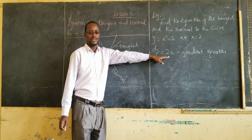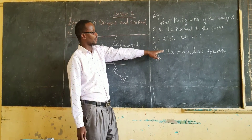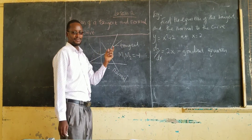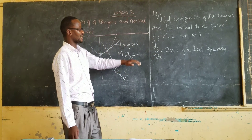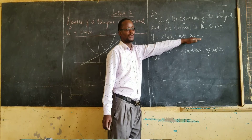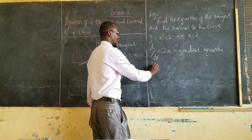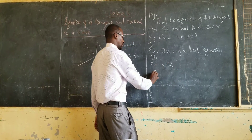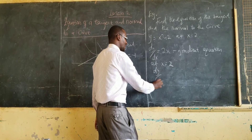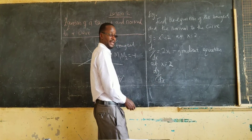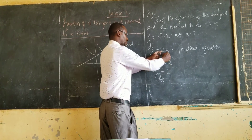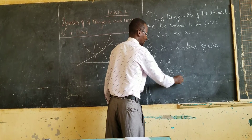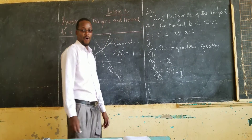So, all you have to do is to substitute the value of x at the given point. In this case, we are given x equal to 2. So, at x equal to 2, the gradient of the tangent, dy/dx, is equal to — you substitute it here — 2 times 2, and you get the answer as 4.